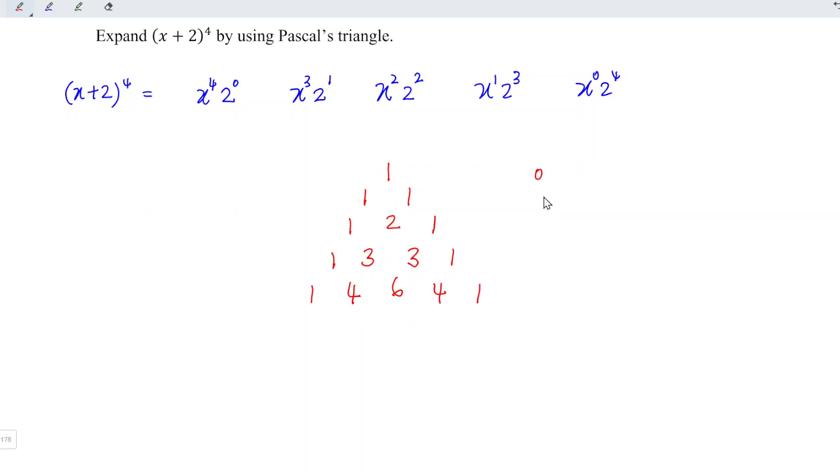This is for power 0, 1, 2, 3, 4. We need power 4, which means the coefficients are this row. So we have 1, 4, 6, 4, 1.